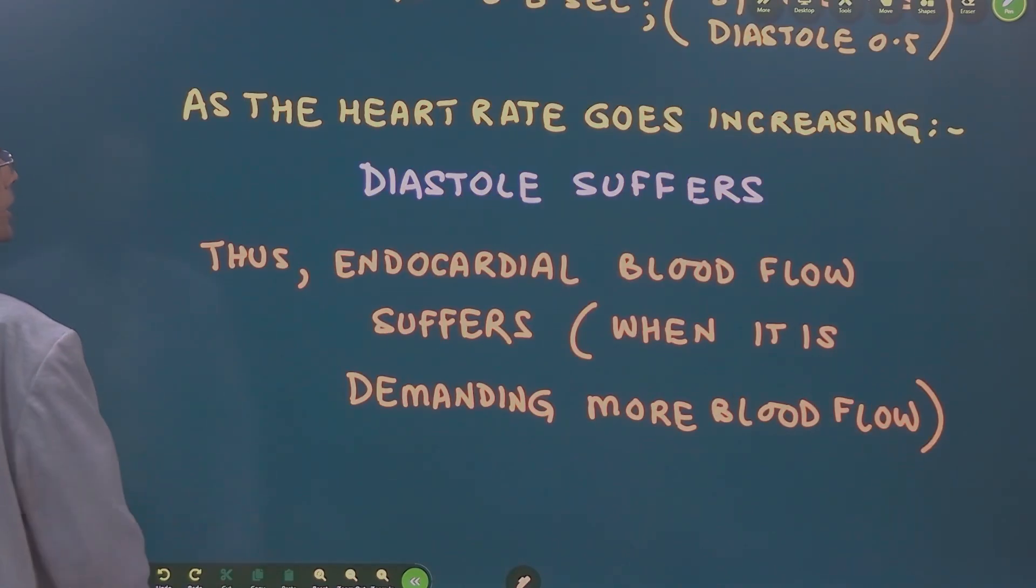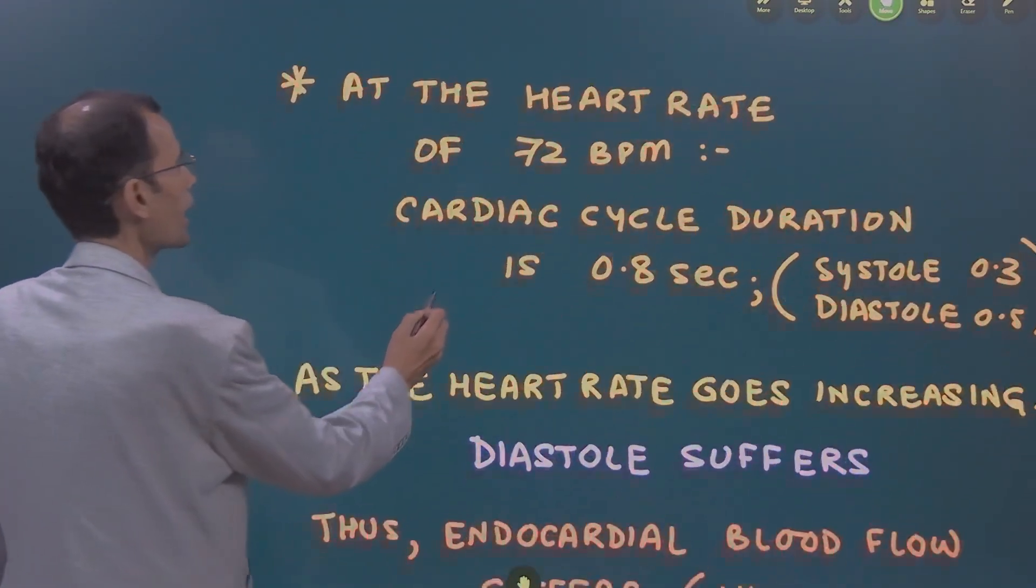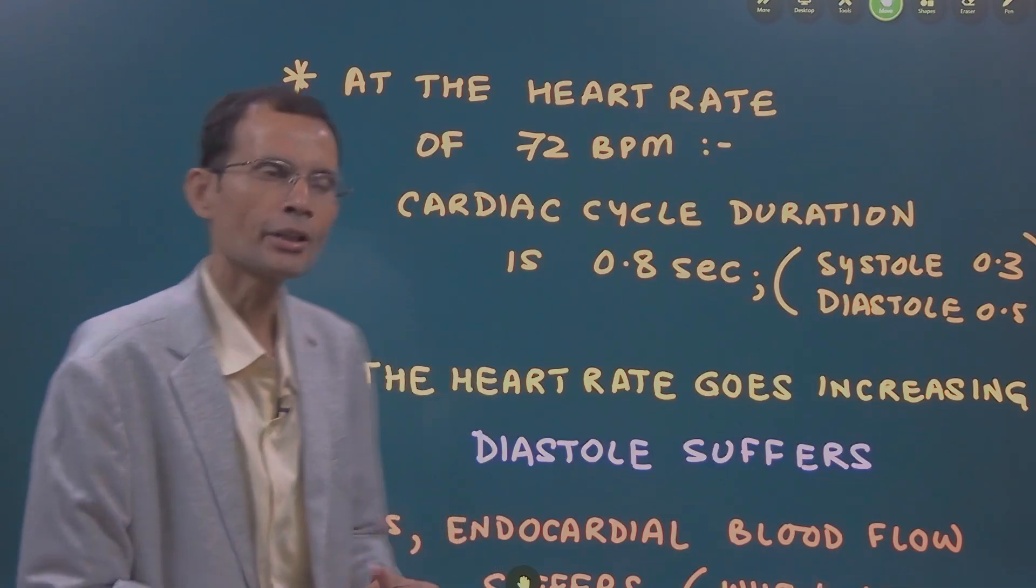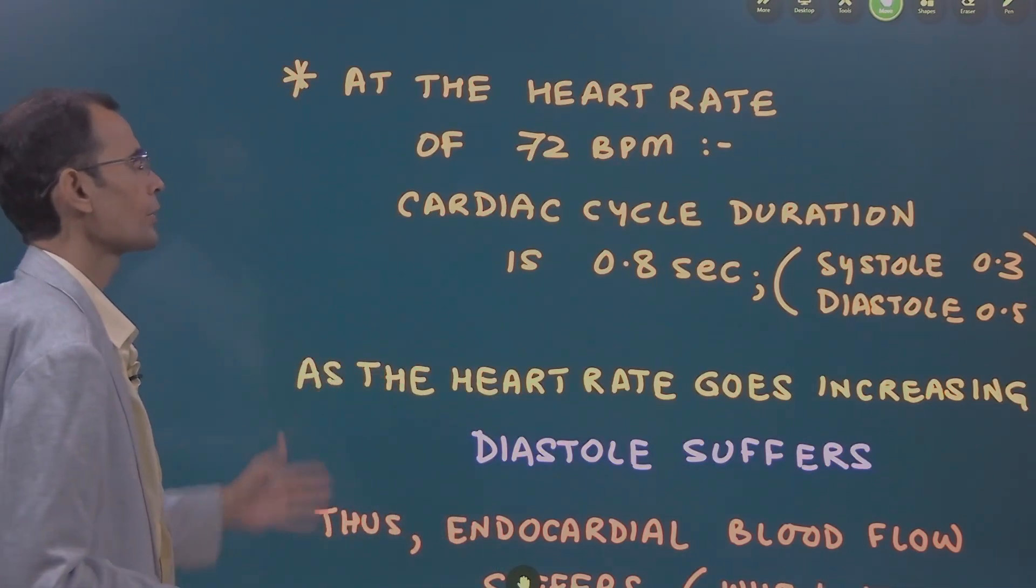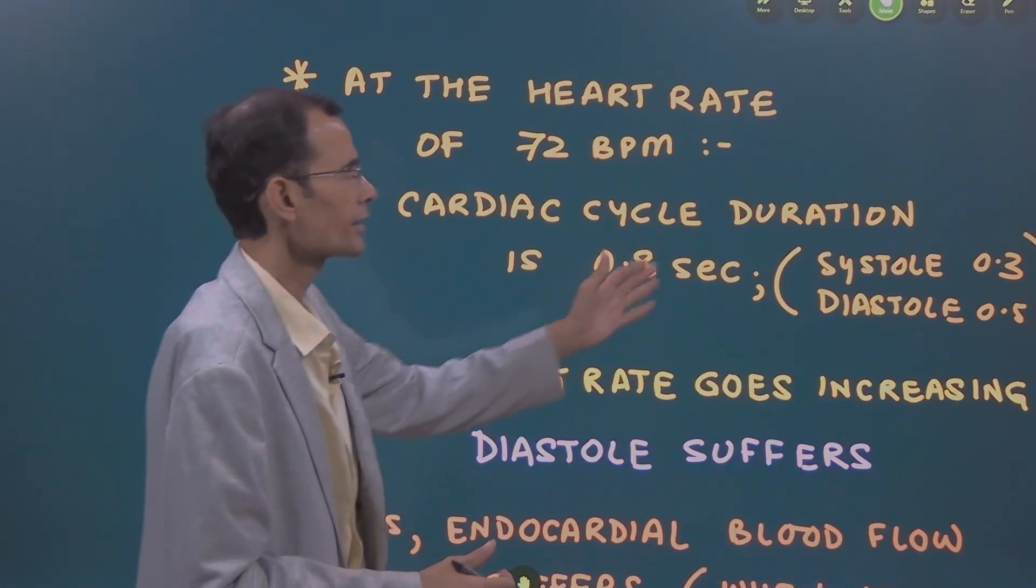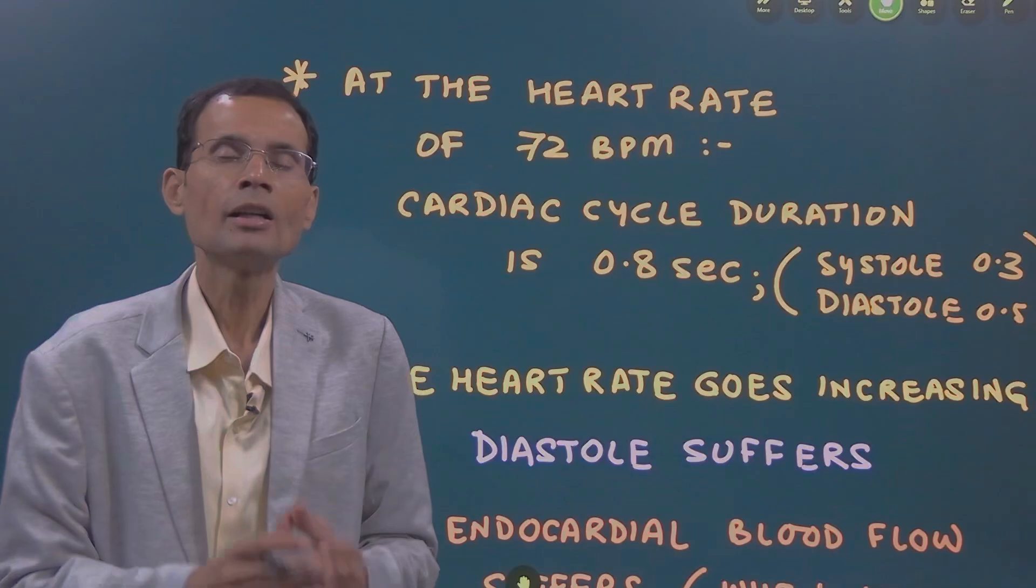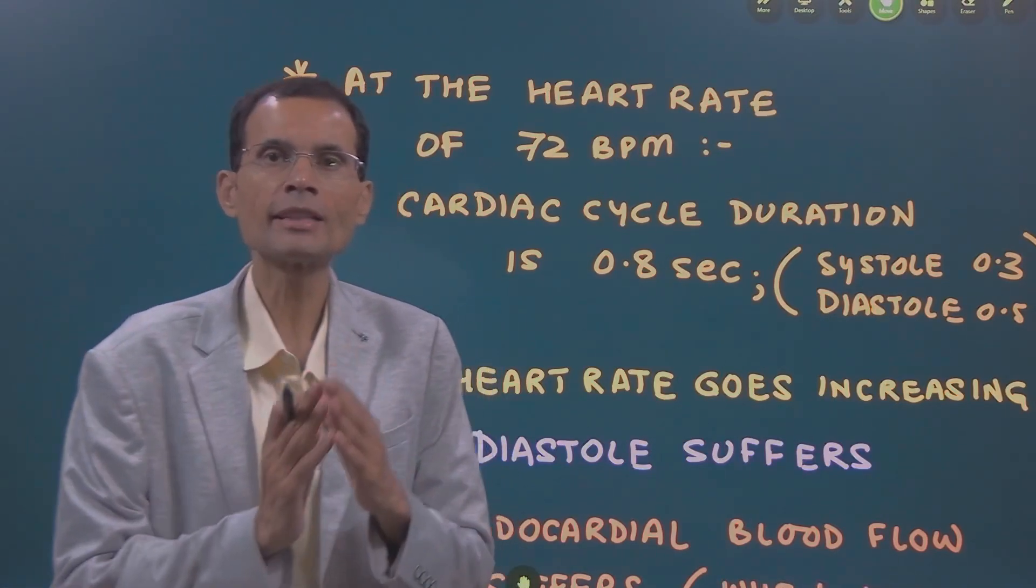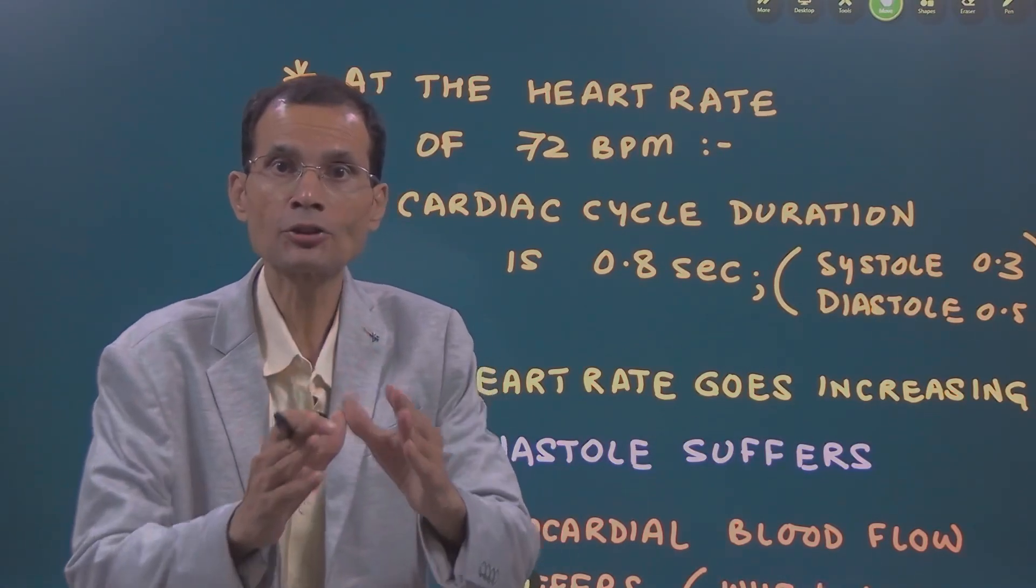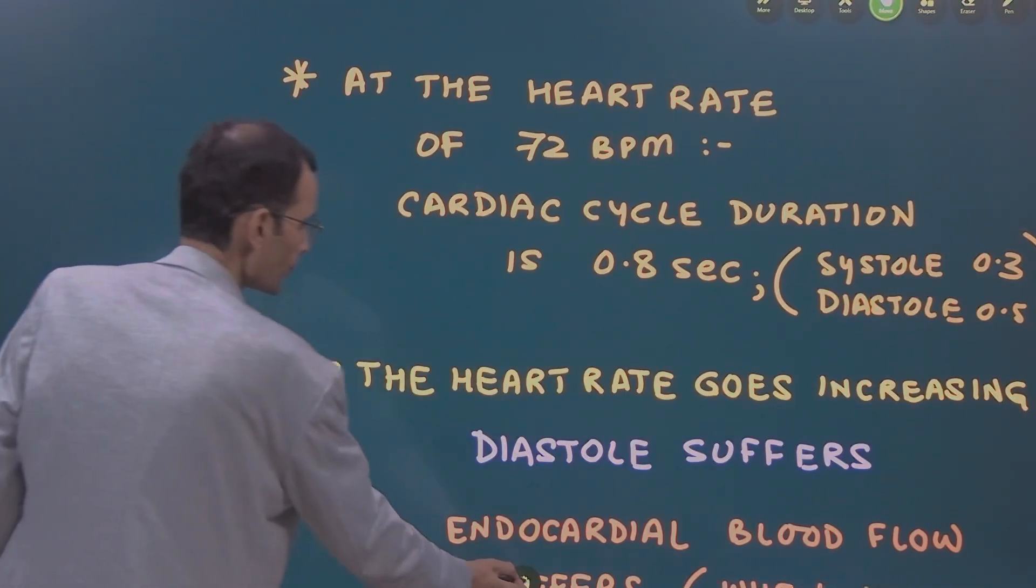And the third point is this, the crucial physiological aspect. You know, at the heart rate of 72 beats per minute, the cardiac cycle duration is 0.8 seconds and in that, the systole is 0.3 seconds, diastole is 0.5 seconds. Remember, endocardium receives its blood flow during diastole. Now, this is the diastole duration at normal heart rate.